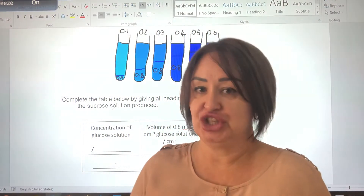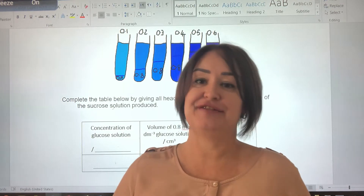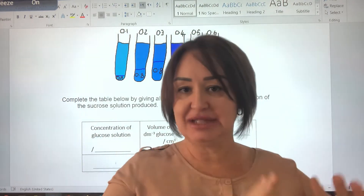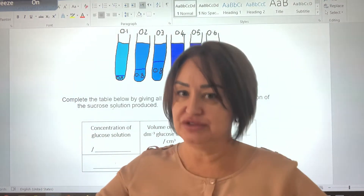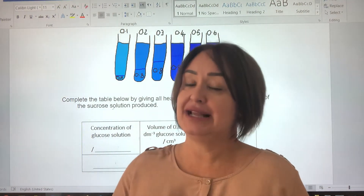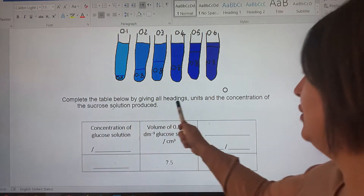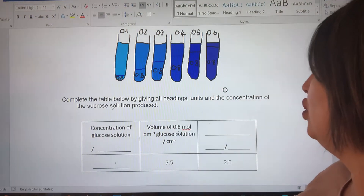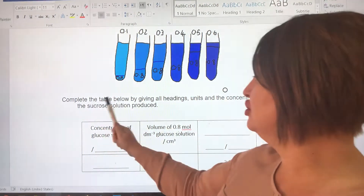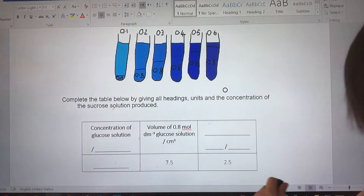This question is actually asking us in a slightly different format from before. Remember, before we've used v1 times c1 equals v2 times c2. Let's have a look at what this question gives us — it says complete the table below by giving all headings, units, and the concentration of the sucrose solution produced.